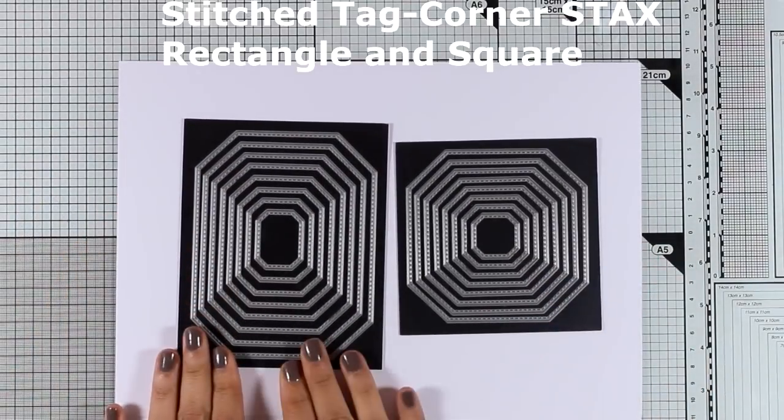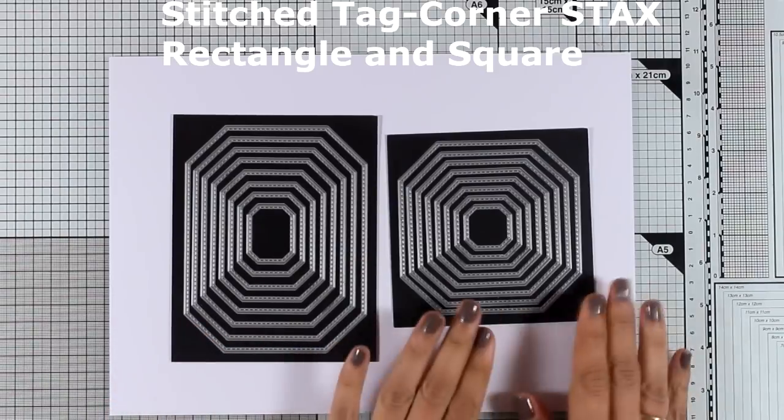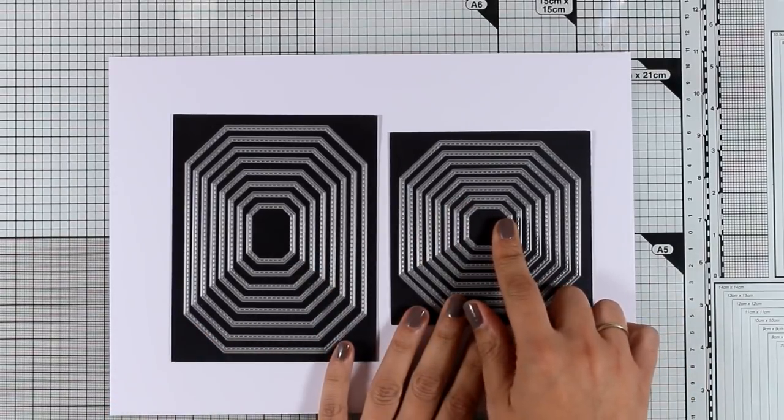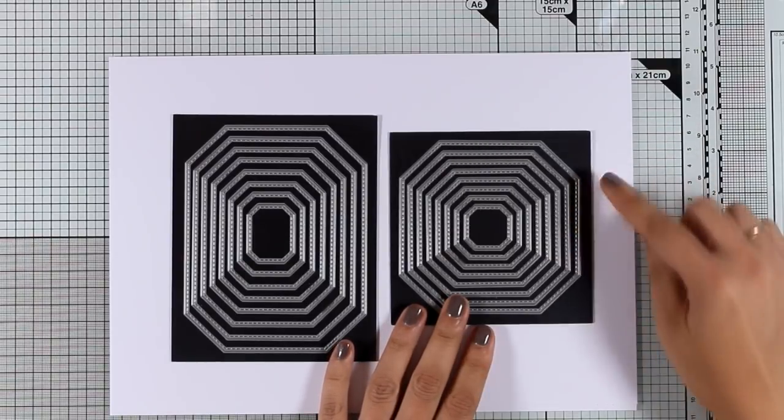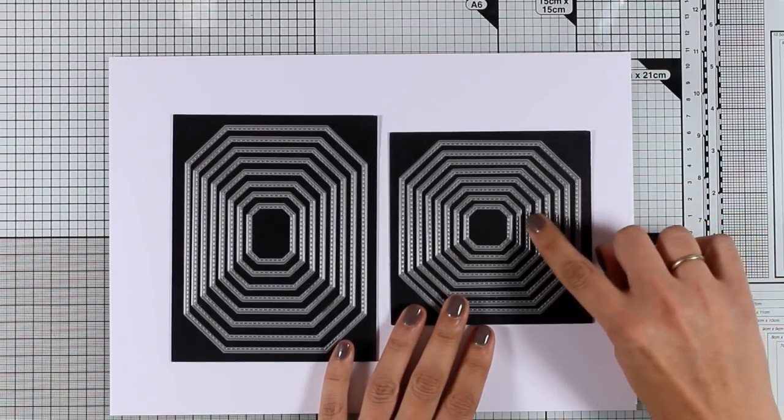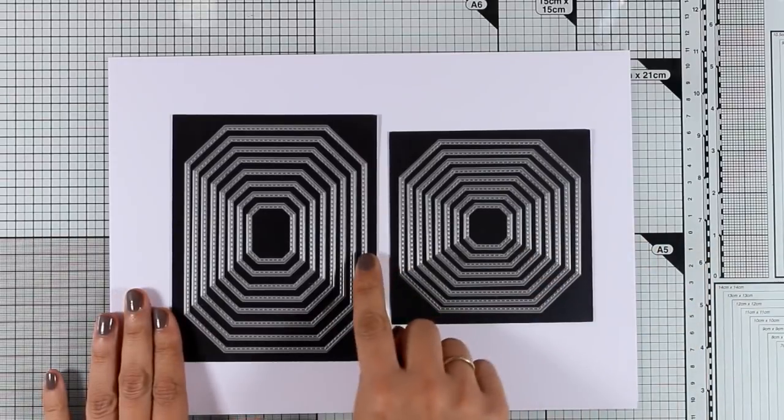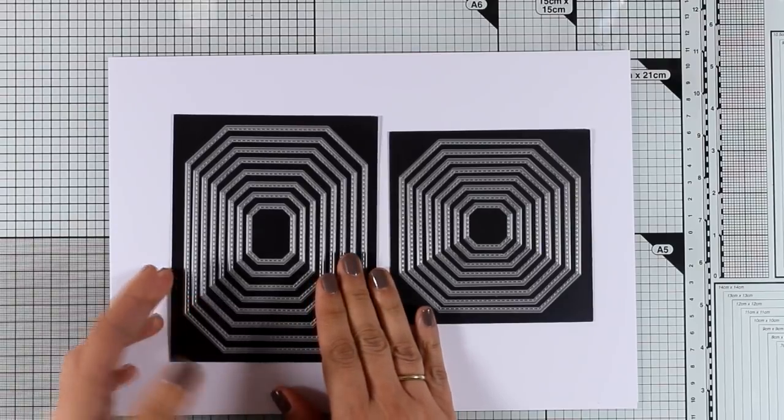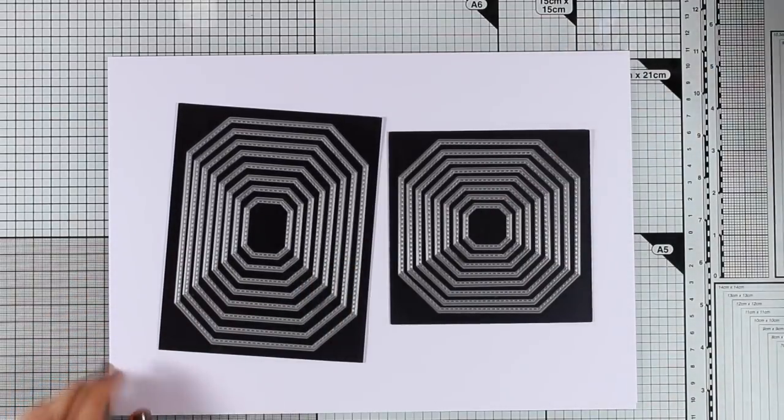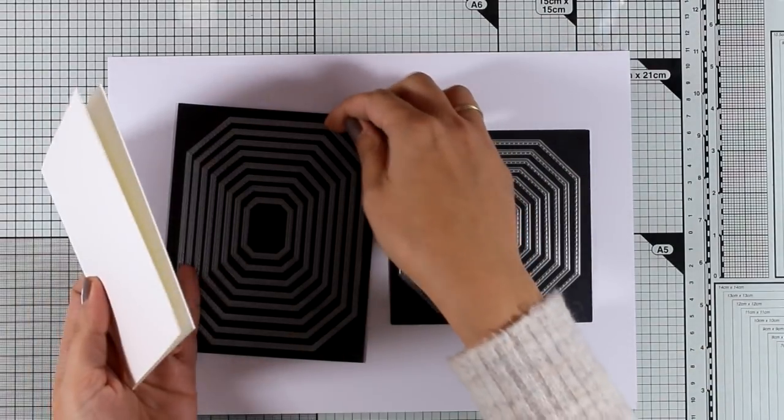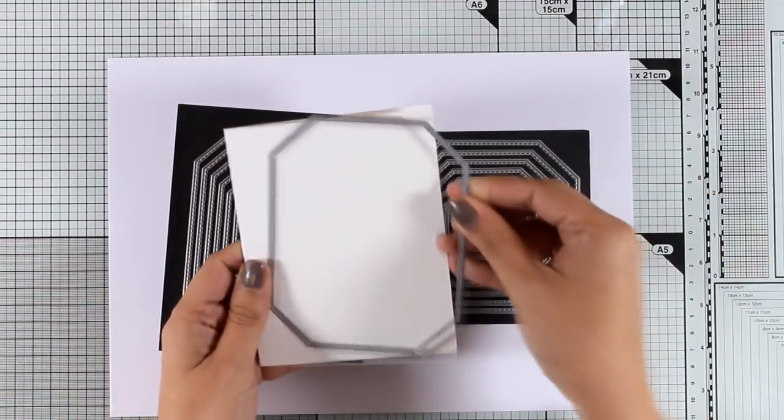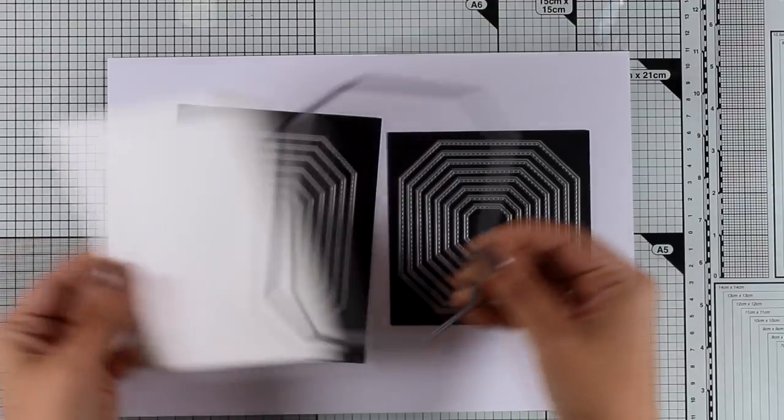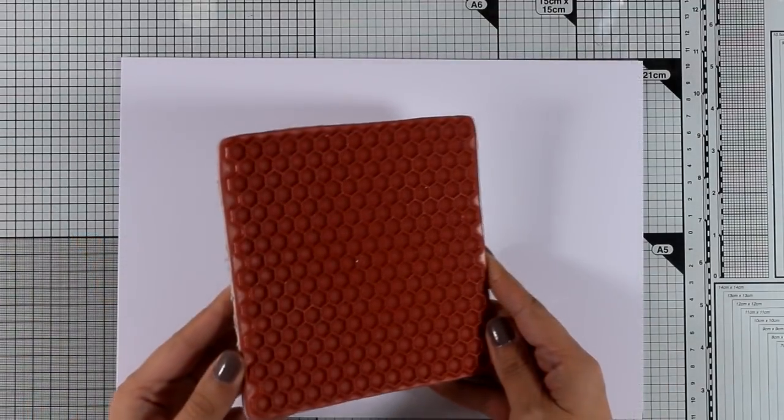And here are two more dynamic sets, these are the Stitch Tag Corner Stacks and they come in both rectangle and square shapes and as you can see there are eight different dies in every stack and I'm going to bring in a standard card here so you can see pretty much the size since the largest of the rectangle ones are going to fit nicely inside a standard card. So you can use them to create panels or frames and add more interest on your cards.